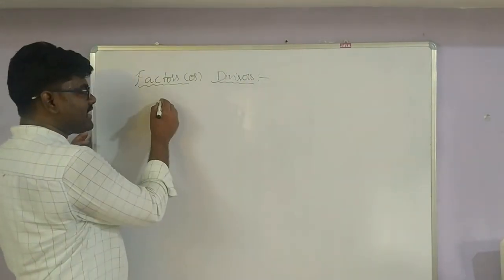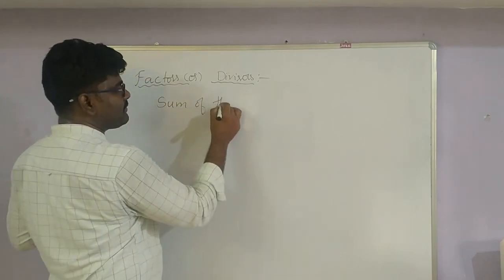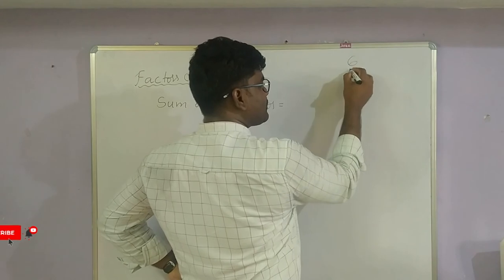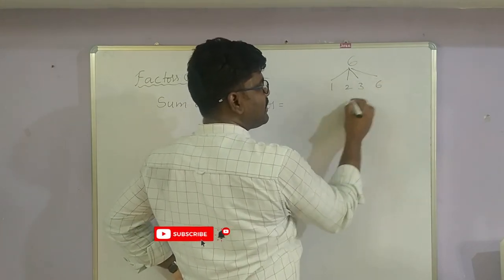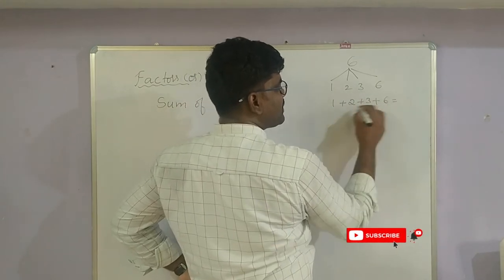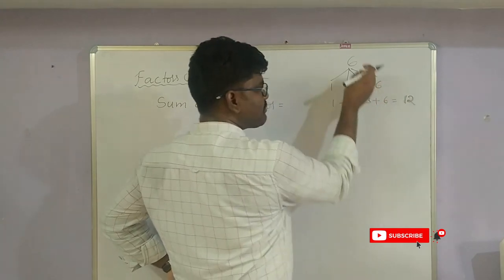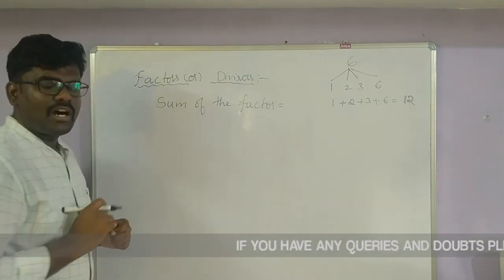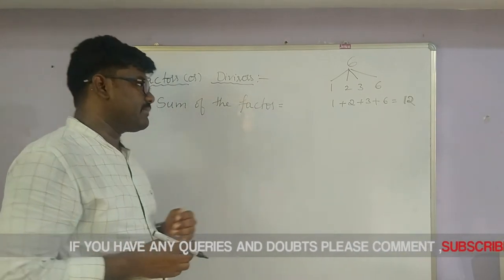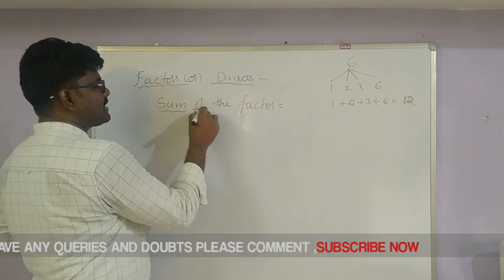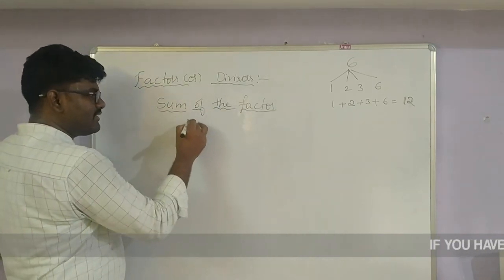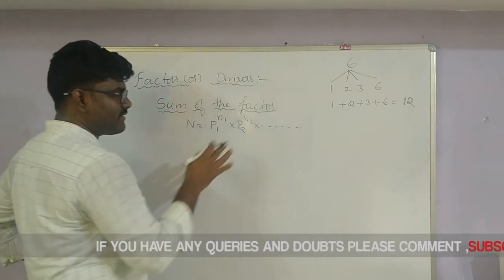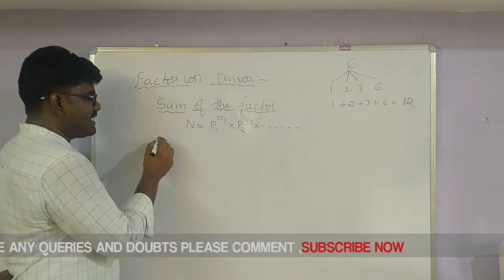Next we look at sum of factors. For 6 with factors 1, 2, 3, 6: sum = 1 + 2 + 3 + 6 = 12. For small numbers it is easy to add directly. For 72, we need a formula. First do prime factorization to get N = p1^n1 × p2^n2 × ..., then we can find the sum of factors.